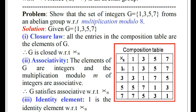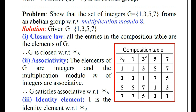The second row is headed by number 3. We multiply each element of G by 3. 3×1=3. 3×3=9: when 9 is divided by 8, remainder is 1. 3×5=15: when 15 is divided by 8, remainder is 7. 3×7=21: when 21 is divided by 8, remainder is 5, since 8×2=16 and 21−16=5.